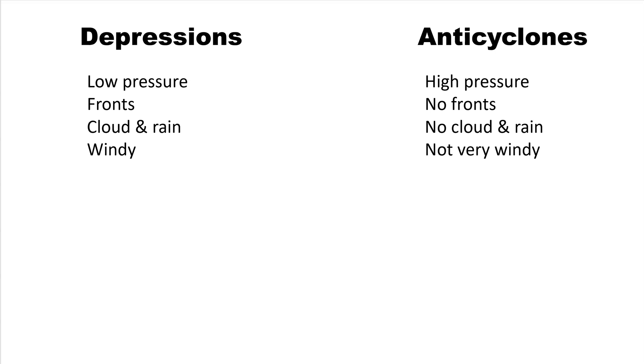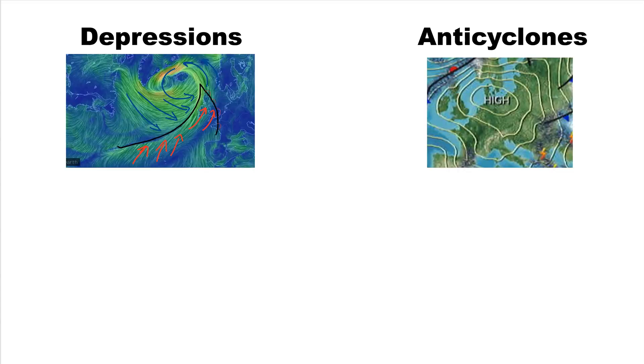Depressions have the isobars very close together, so it tends to be windy. Anticyclones have isobars far apart, so it tends not to be windy.